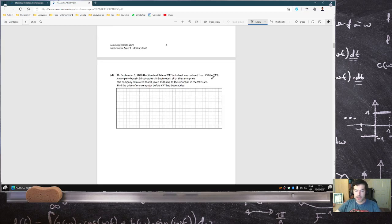VAT was reduced in 23 to 21%. The company bought 30 computers in September, all at the same price. The company calculated that it saved 336 due to the VAT reduction. Find the price of one computer. So it saved 336 for 30, which means 336 divided by 30.